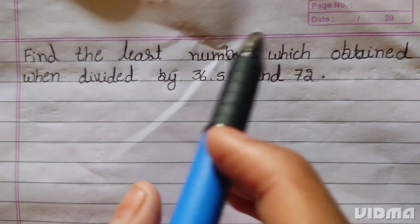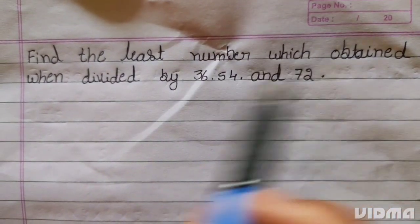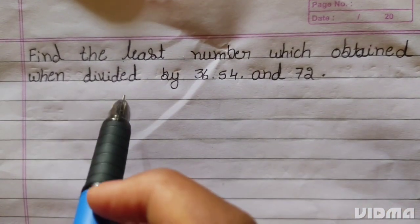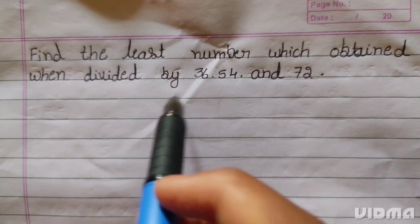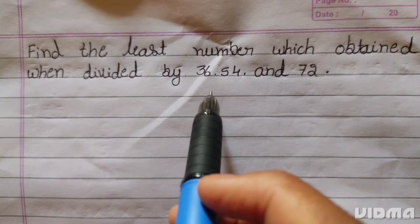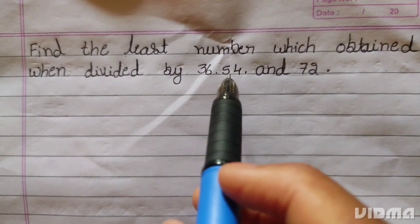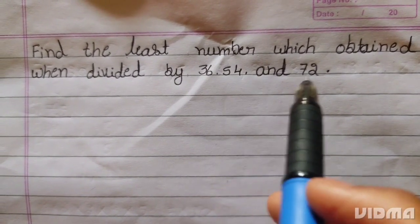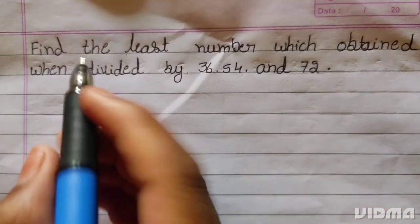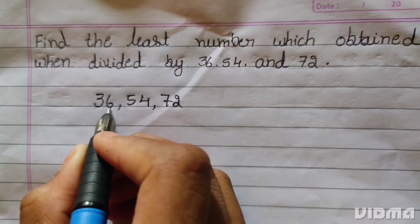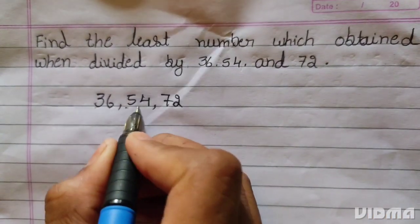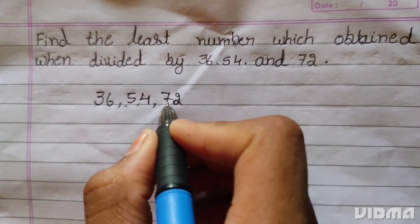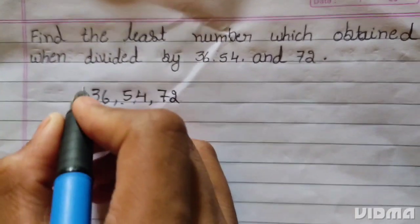Find the least number which, when divided by 36, 54, and 72.